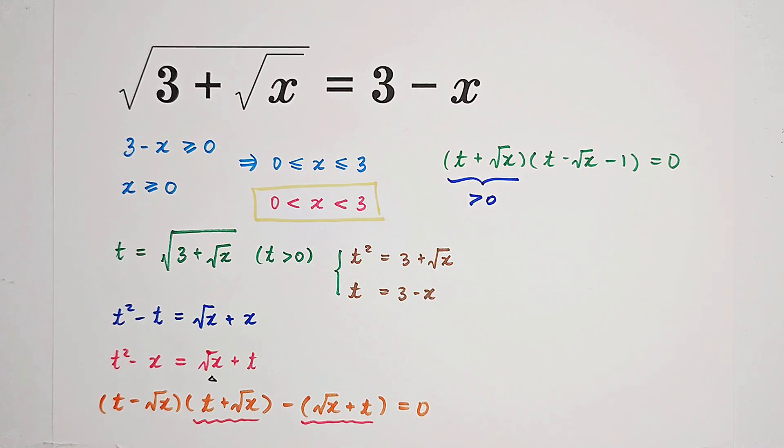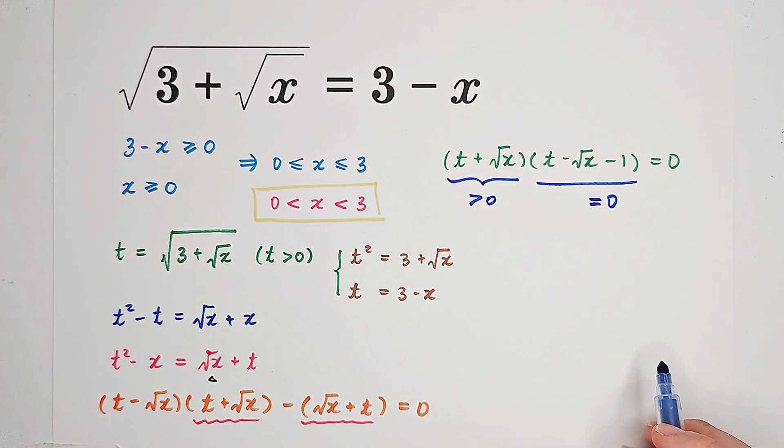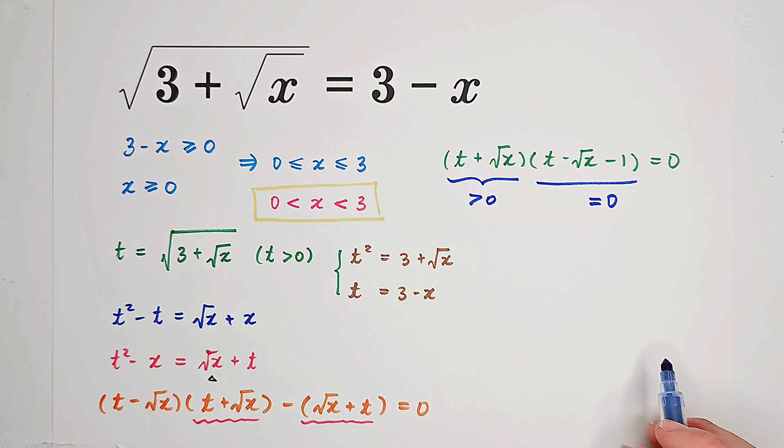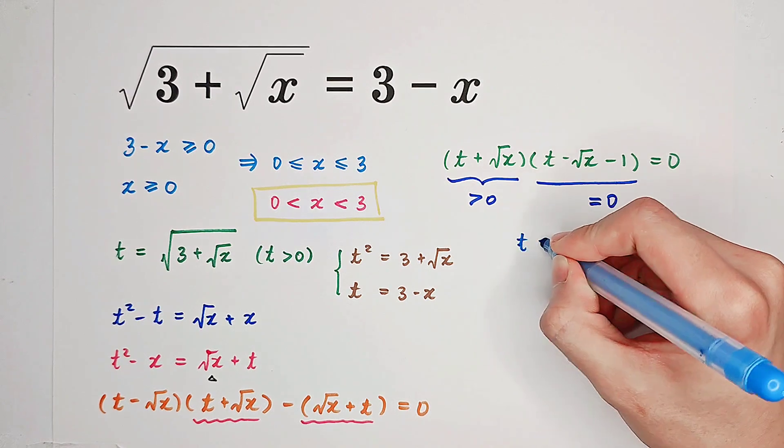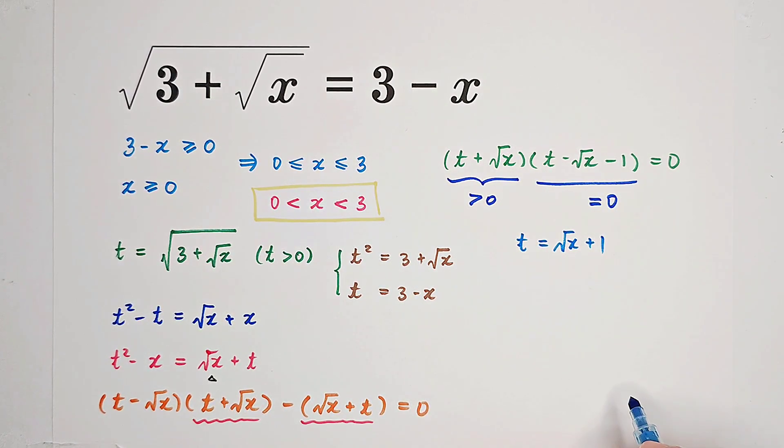What does it mean? It means that this one should be equal to 0. Which implies that t should be square root of x plus 1. Or t minus square root of x equals 1. t is square root of x plus 1. What is t? t is this one. So it means that square root of 3 plus square root of x is 1 plus square root of x.